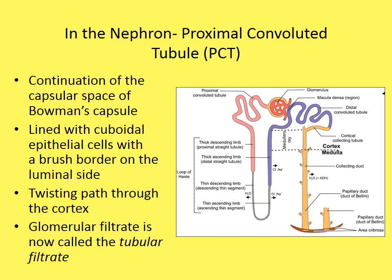After the Bowman's capsule, glomerular filtrate moves into the proximal convoluted tubule (PCT). The PCT is a continuation of the capsular space, lined with cuboidal epithelial cells with a brush border on the luminal side, and takes a twisting path through the cortex. Once in the tubule, the fluid is called tubular filtrate.